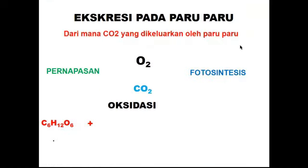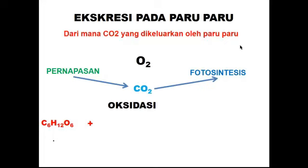Bagaimana prosesnya? Ekskresi pada paru-paru itu mengeluarkan CO2 dan juga uap air. Dari mana CO2 itu dikeluarkan? Pada saat kita bernafas, mengeluarkan CO2, dimana CO2 itu dibuang ke udara, akan dimanfaatkan oleh tumbuhan untuk proses fotosintesis. Dan dari fotosintesis itu dihasilkan oksigen, oksigen itulah yang nanti kita hirup.